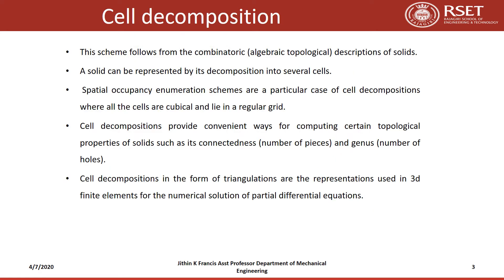Cell decomposition follows from the combinatoric description of solids. A solid can be represented by its decomposition into several cells. Spatial occupancy enumeration schemes are a particular case of cell decompositions where all cells are cubical and lie in a regular grid. Cell decompositions provide convenient ways for computing topological properties such as connectedness and genus.